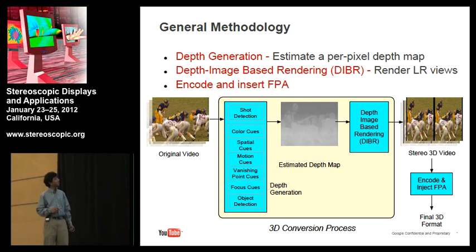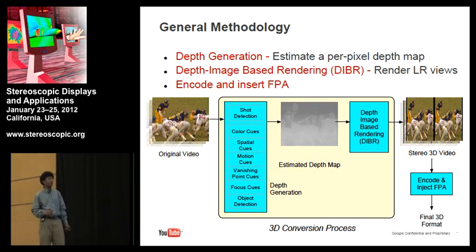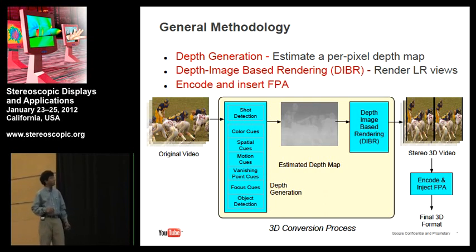The general methodology of 3D conversion has two different steps: depth generation, where given a 2D video you do image analysis and understanding to estimate a depth map, and then depth image based rendering (DIBR) to render the left and right views. Once we do that, we have the stereo 3D video in raw format, then we encode it and inject the frame packing arrangement information to get a standardized 3D content. The depth generation part is really the meat — the intelligence — of the whole algorithm.